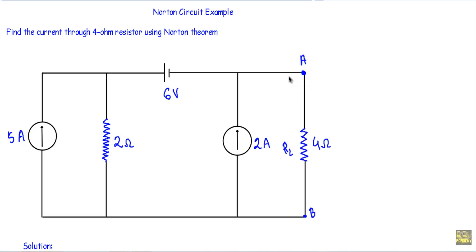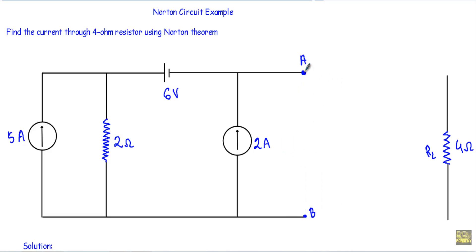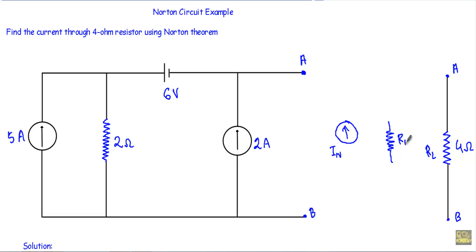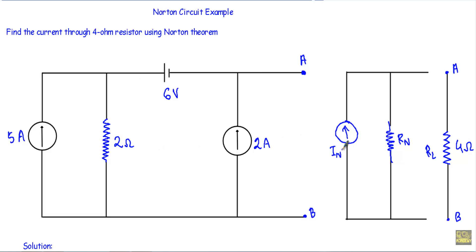In the first step I will disconnect the load resistor from our original circuit. After removing RL, this is our A terminal and this is our B terminal where the load resistor was connected. This is a linear bilateral circuit, so we can convert this total circuit into a current source IN in parallel with a resistor RN, which will be our Norton equivalent circuit.